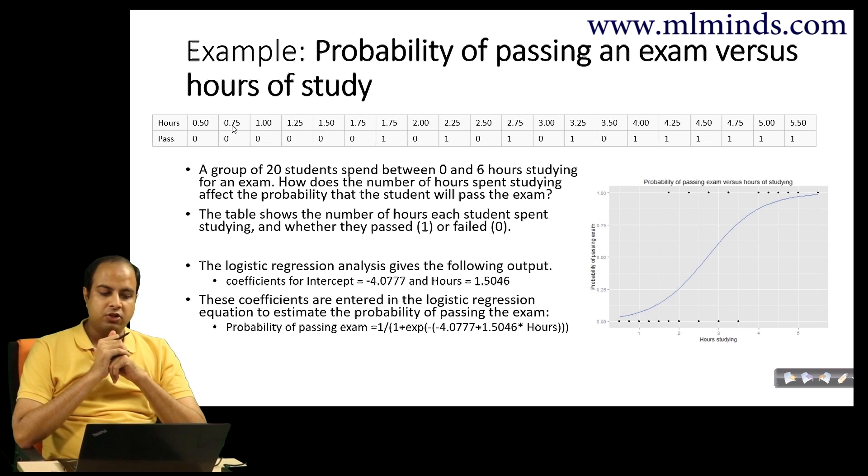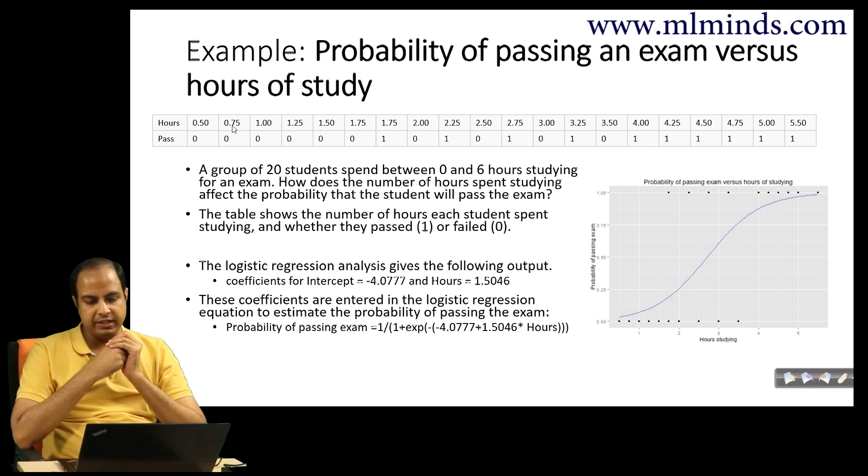A group of 20 students spend between 0 to 6 hours studying for an exam. How does the number of hours spent studying affect the probability that the student will pass the exam? If the student studies more, you would assume they can pass the exam with higher probability, and this is seen in the data as well.